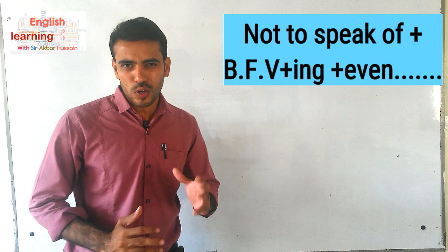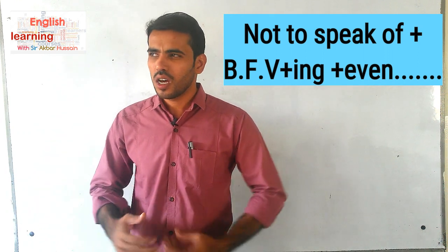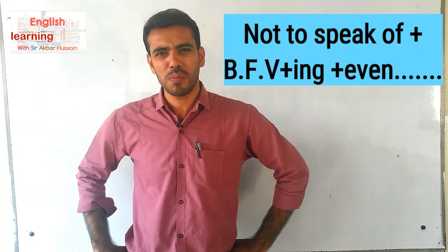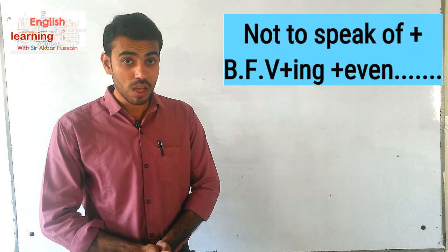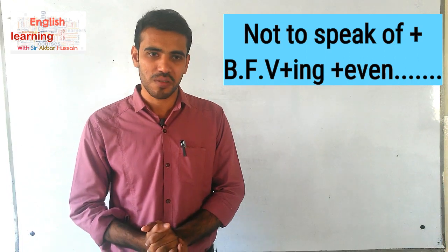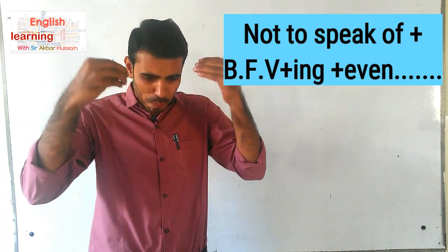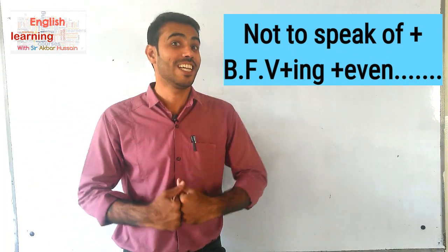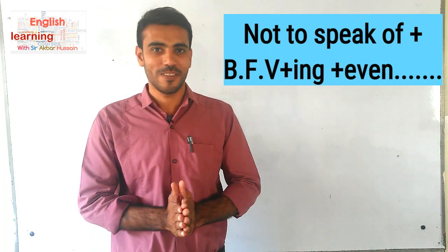You will hear a sentence in Urdu like: English bolna toh bohat door ki baat hai, lekin Urdu bhi theek se nahi aati. This kind of sentence — where something far away is mentioned and even a simpler thing is not possible — we will translate using the structure 'not to speak of.'